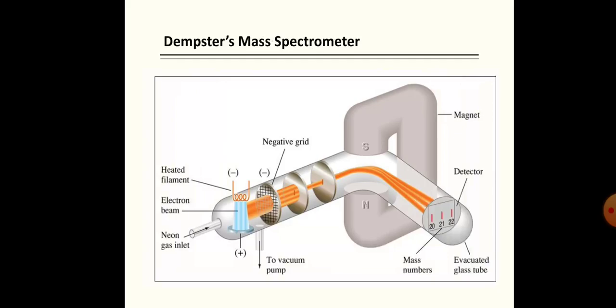The first part is for vaporization and ionization of the element. The next part starts from the negative grid and consists of electric plates and magnetic plates. These plates cause separation of ions on the basis of mass, separating the isotopes. The last part, starting from the detector, detects ions of definite mass and records the result in the form of a graph.